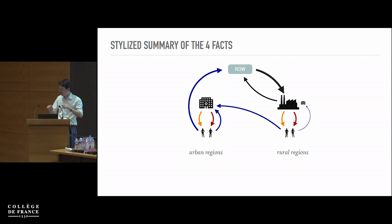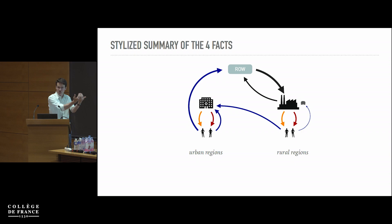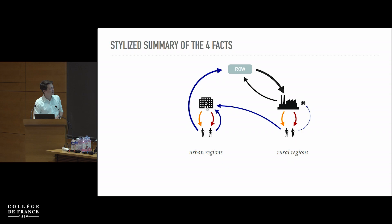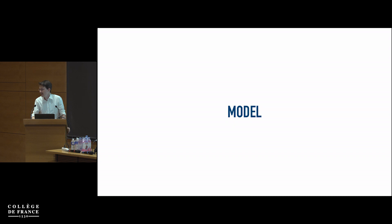To summarize in a stylized picture: the rural production cells are the ones exporting, so money enters the Danish economy there. They import some goods — money flowing out — and pay workers in rural regions. Those rural workers do some local spending but some also goes into the cities. In the cities there's predominantly service and non-tradable production; those producers pay urban workers, who then have a relatively high share of spending abroad. That's the stylized circular flow, though the underlying detail is much more complicated.